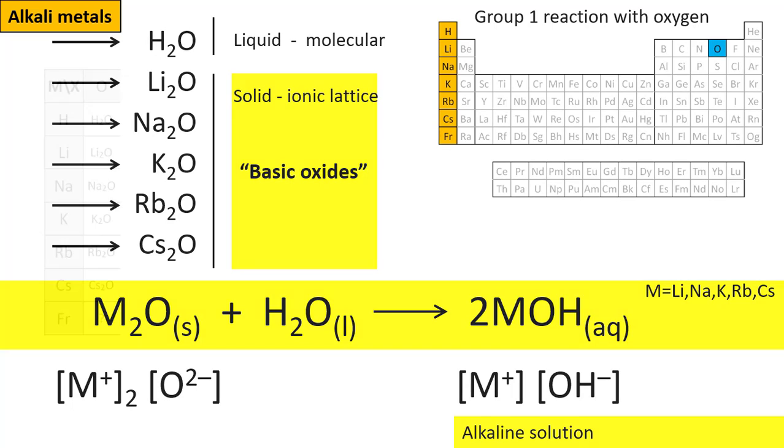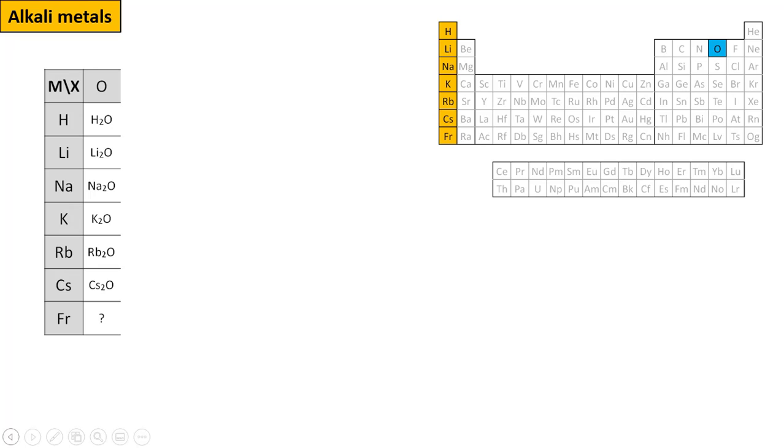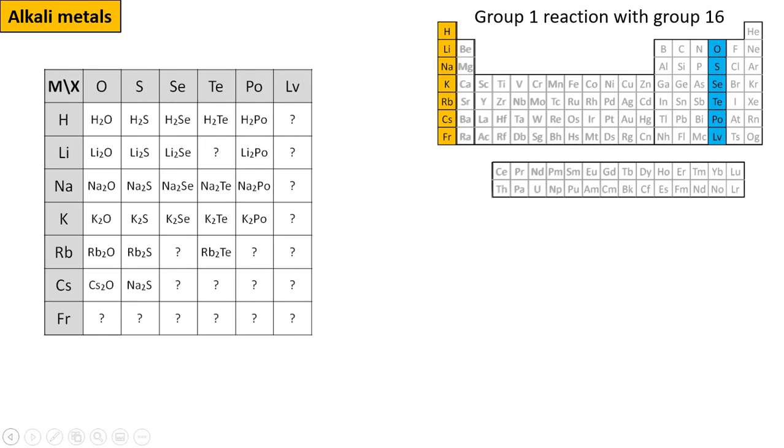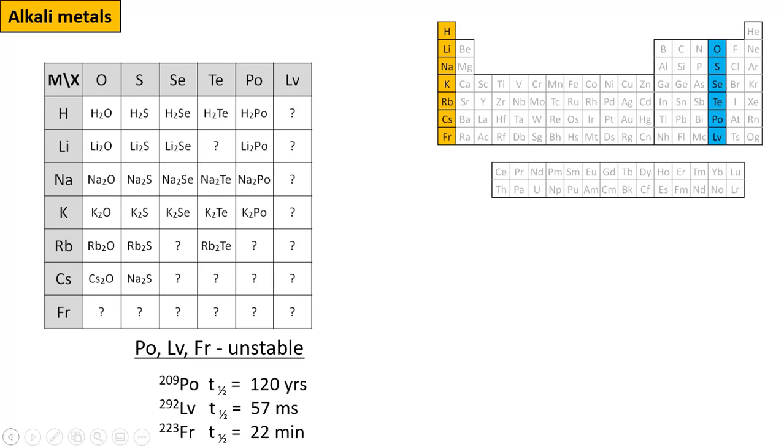Oxygen is of course just the first member of group 16. And of course we should look at how the other elements in group 16 also react with the elements of group 1. Okay, so there are some unknowns here. That's largely because the last members of these groups are short-lived and unstable. Polonium is very radioactive, making it difficult to work with. But francium and livermorium are even more short-lived. They don't stick around long enough to allow us to do any chemistry on them.